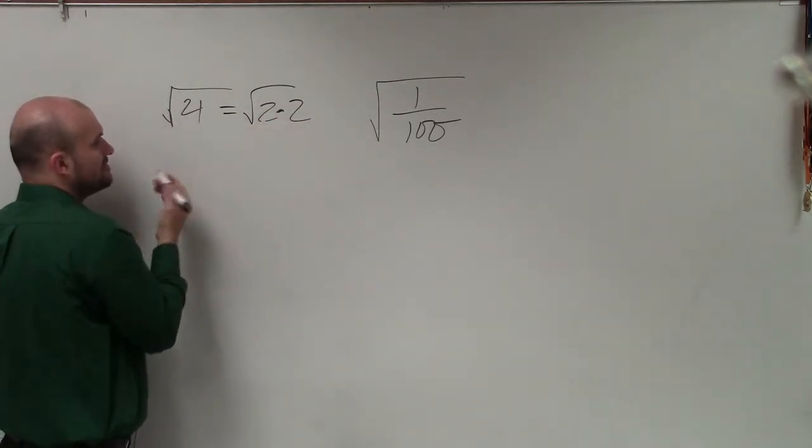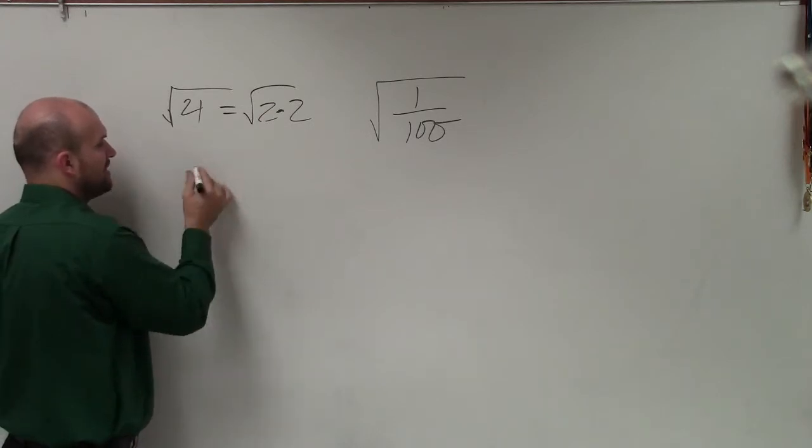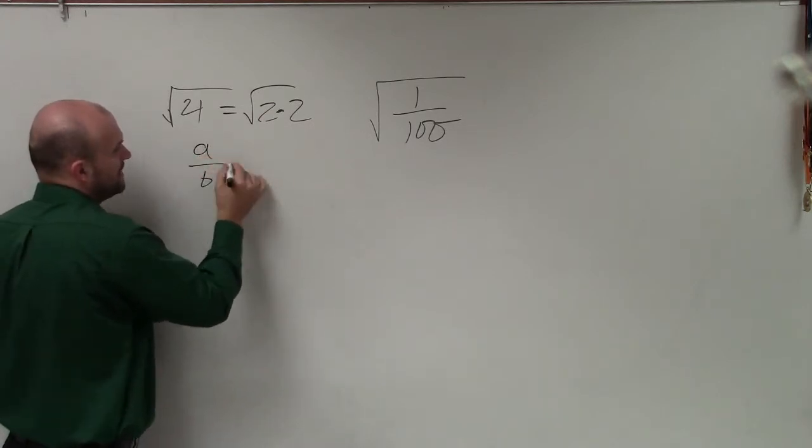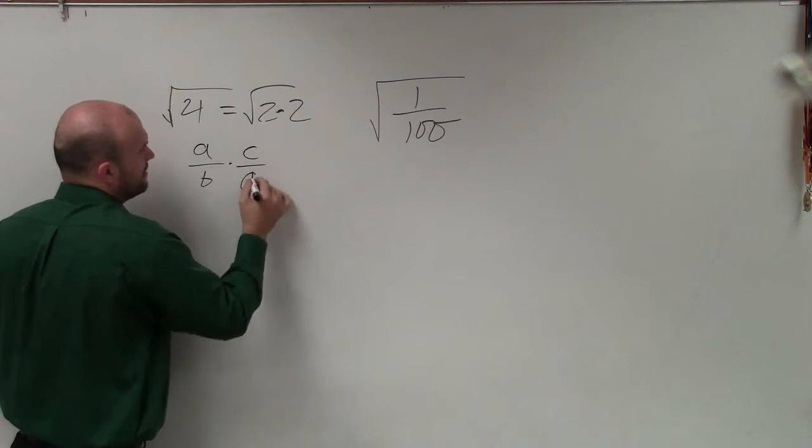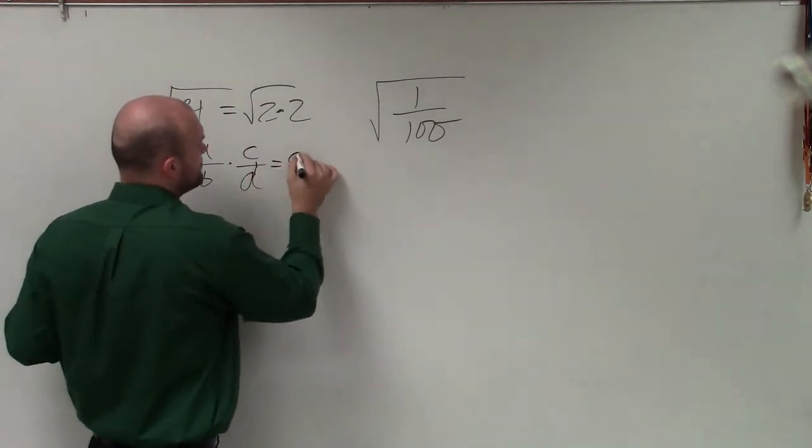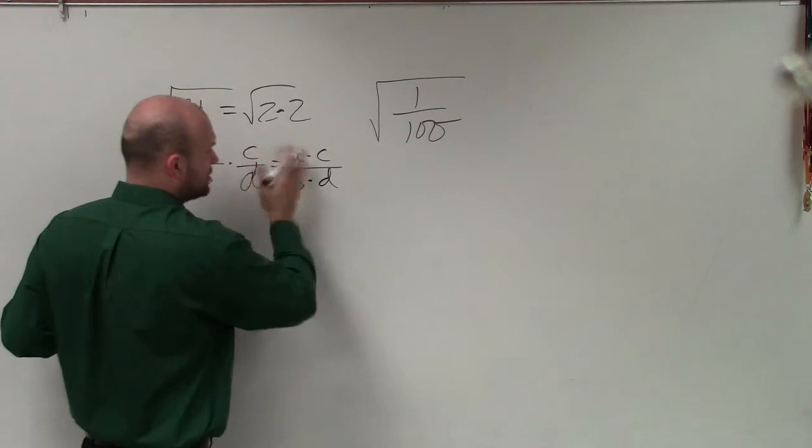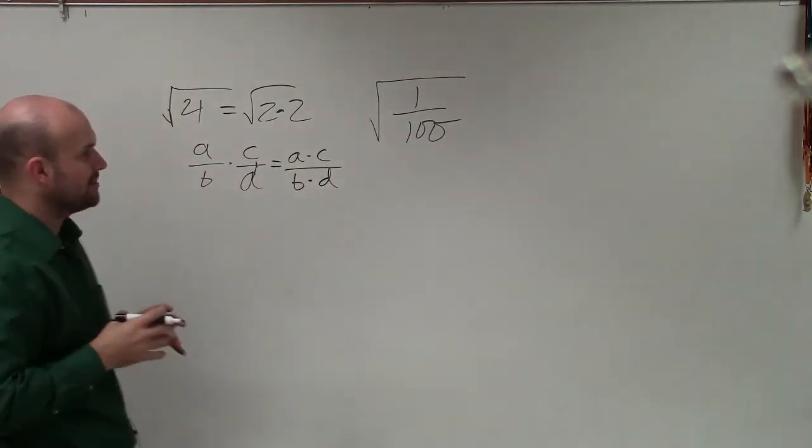So when I'm looking at this, when we multiply fractions, if I have a over b times c over d, we just multiply across, right? We just multiply numerator times the numerator, denominator times the denominator.